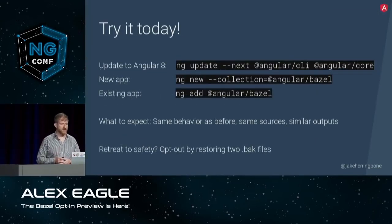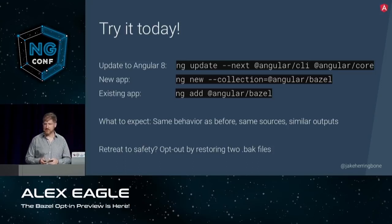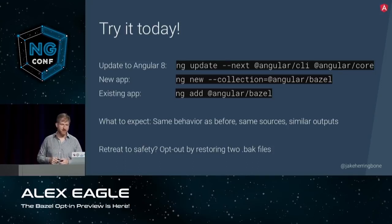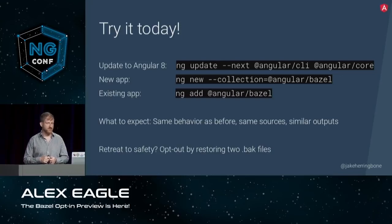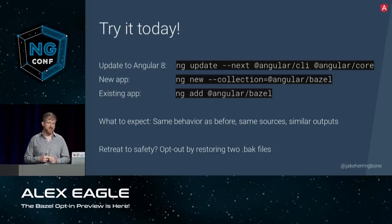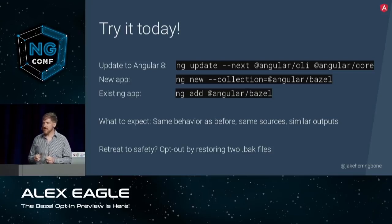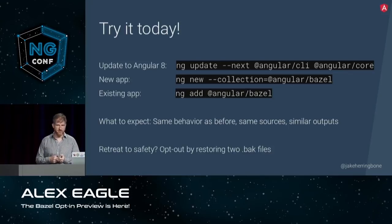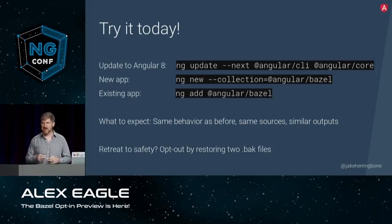So let's say you want to try this and you have an app where you think Bazel can actually solve your problems. The simple way to get on board: first, update to Angular 8. Then either create a new app using the @angular/bazel collection, or use that same package with ng-add to add Bazel into your existing application. At this point, you should expect the same behavior as before — your sources haven't really been changed, there are just a couple of differences when we set up Bazel, and the outputs all look similar.